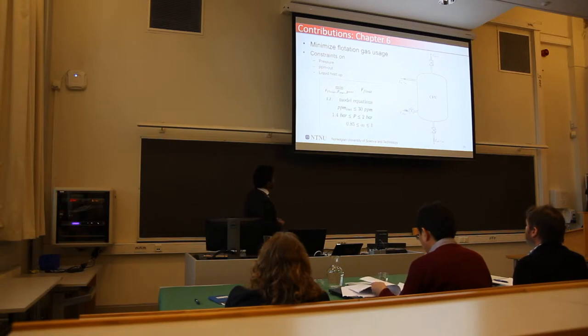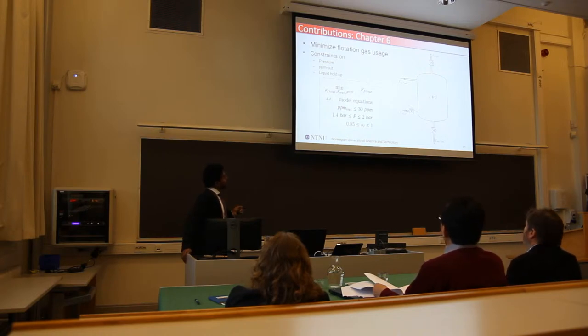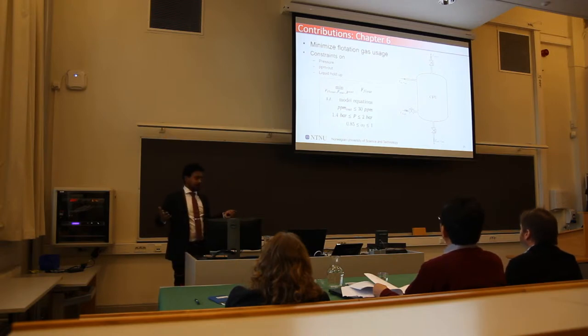We use this model to study some optimization. In chapter number five, in chapter number six, we have a different optimization compared to what we have in chapter number seven. In chapter number six, we try to minimize the use of flotation gas, which is entering here. We assume that flotation gas is a utility, and we need to minimize the use of utility.